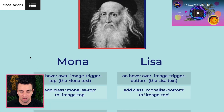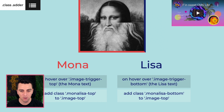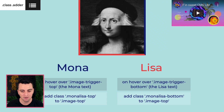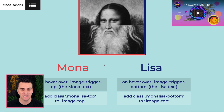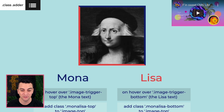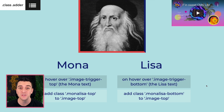Here we have our Mona and we have our Lisa. When I hover over Mona, we see Mona on the top. When I hover over the bottom, we see Lisa on the bottom. So this is changing the graphic up here based on what I'm hovering over — a good learning experience to see what you can do with ClassAdder.